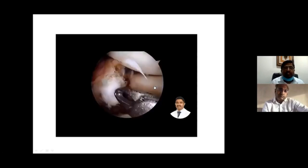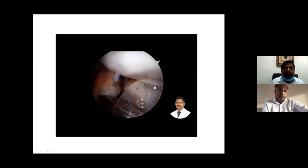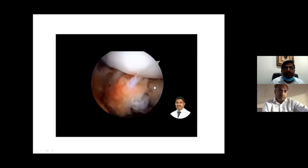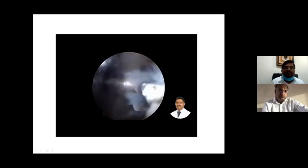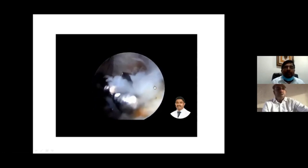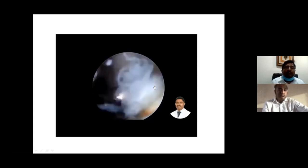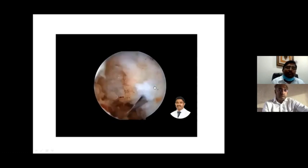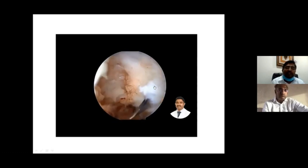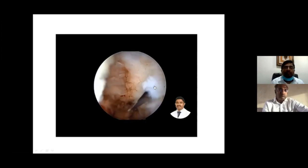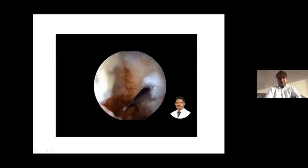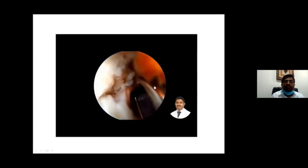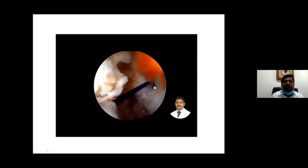Preparation of the bed is very important. Use a shaver or radiofrequency to get a healthy, bleeding bony bed. Once the fragment sits properly in its bed, use the standard PCL jig, placing it approximately 12 mm from the joint line at the bed level. Drill with a 4.5 mm drill bit through the tibia, then pass a spinal needle to the prepared bed and thread a PDS wire through it.